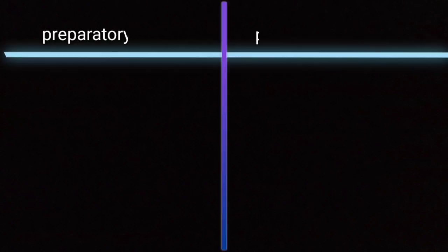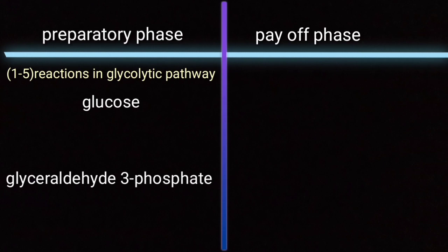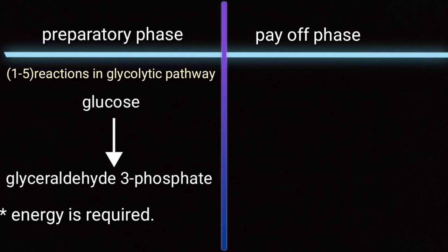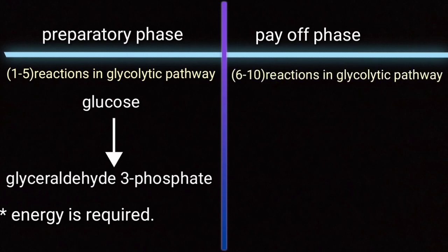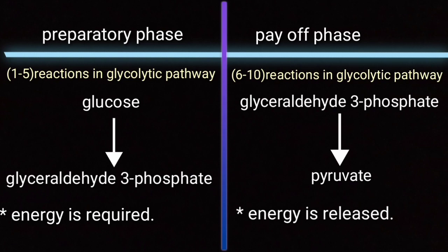Glycolysis has two phases. The first is the preparatory phase and the second is the payoff phase. The reactions occurring in the first five steps are known as the preparatory phase — the sequence of reactions from glucose to glyceraldehyde-3-phosphate. Energy is required in the form of ATP, which is utilized from our body. Steps six to ten are termed the payoff phase — the sequence of reactions from glyceraldehyde-3-phosphate to pyruvate — and energy is released in the form of NADH and ATP.